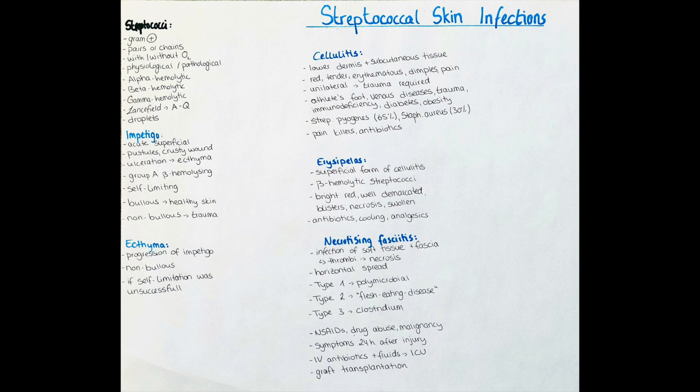We will talk about each of the diseases specifically, but I just want to mention them beforehand to give you an idea about the significance of this topic. Streptococci can cause impetigo, ectyma, cellulitis, erysipelas, and necrotizing fasciitis. In systemic streptococcal diseases like scarlet fever, streptococcal toxic shock-like syndrome, allergic hypersensitivity, psoriasis, and pustulosis acuta generalisata, we can also observe skin manifestations.